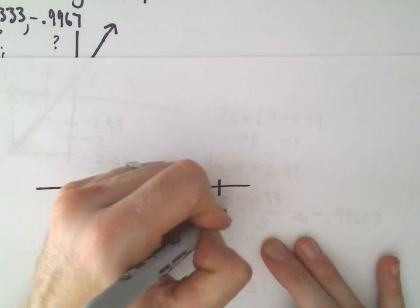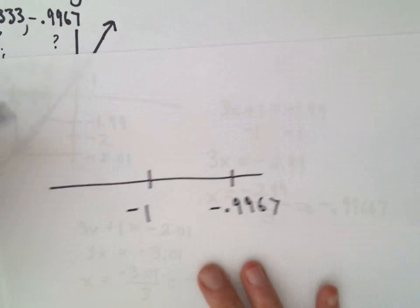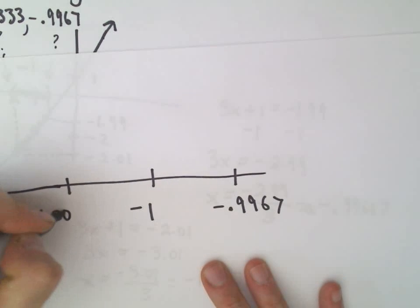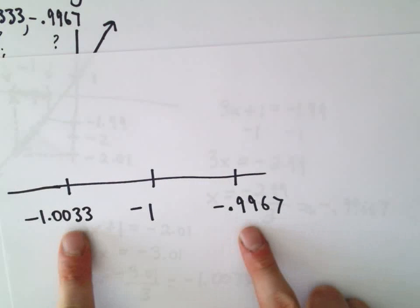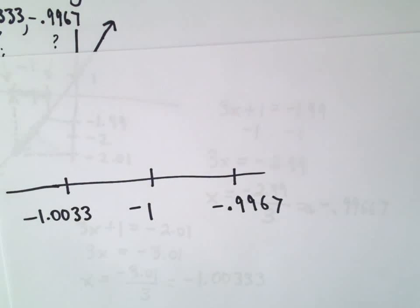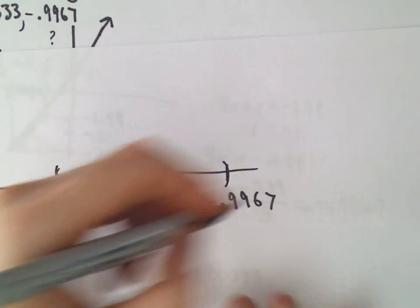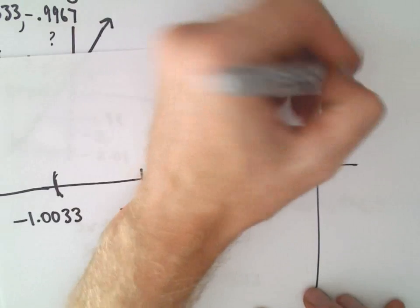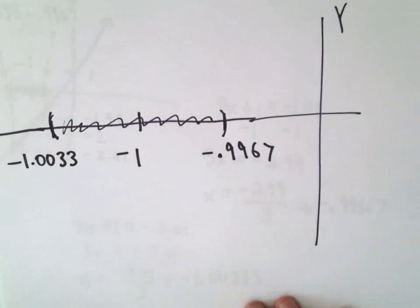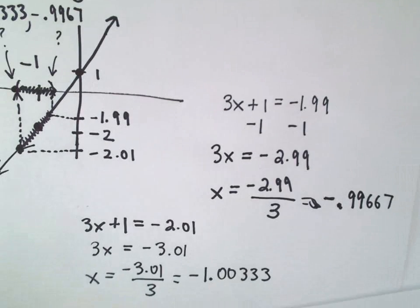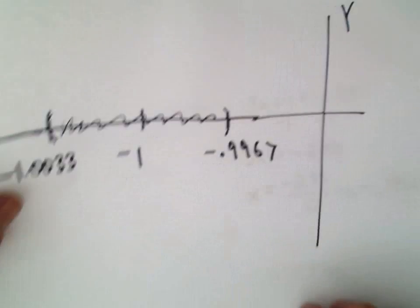Here's negative 0.9967. And then we've got our other x value of negative 1.0033. And I'm going to round it. I guess let's use the same number of decimal places. It says, if we take any x coordinate inside of that interval, so here's our y axis, it says if we take any x coordinate inside of that interval, it says we're going to get a y value that is between negative 1.99 and negative 2.01.